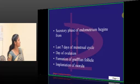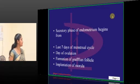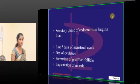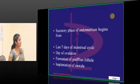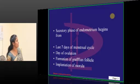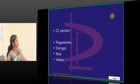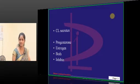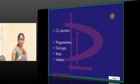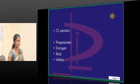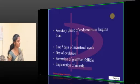When does the secretory phase begin? Why not inhibin? The previous question — someone answered D. Why not inhibin? Inhibin is secreted by granulosa cells, not the corpus luteum.